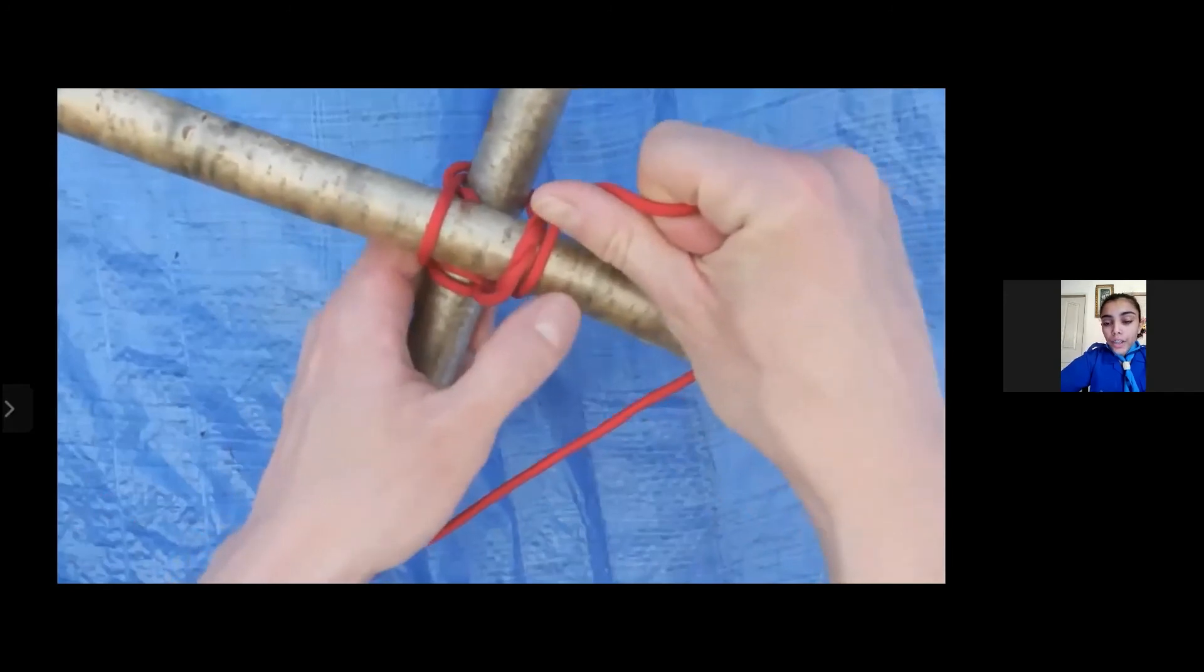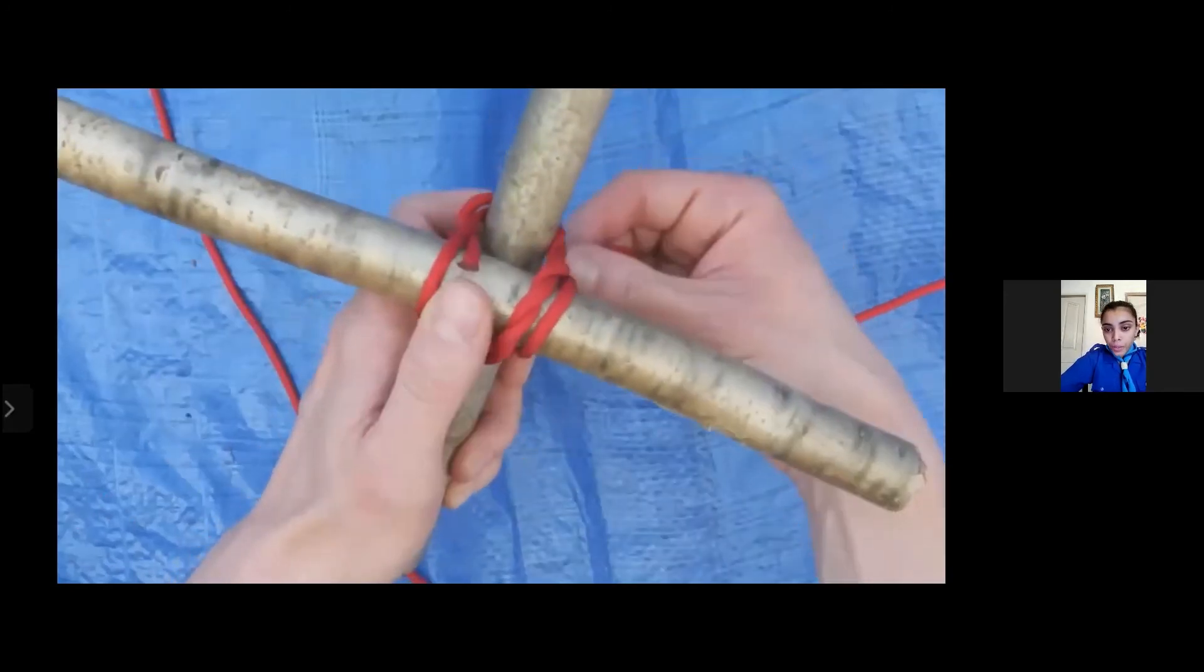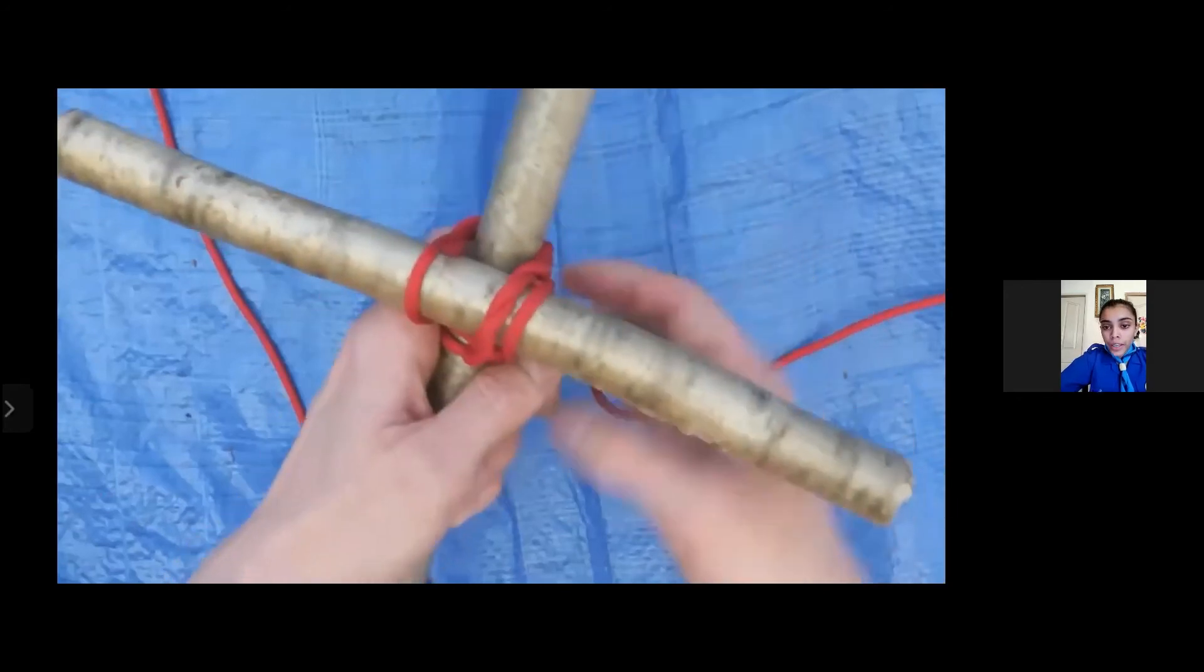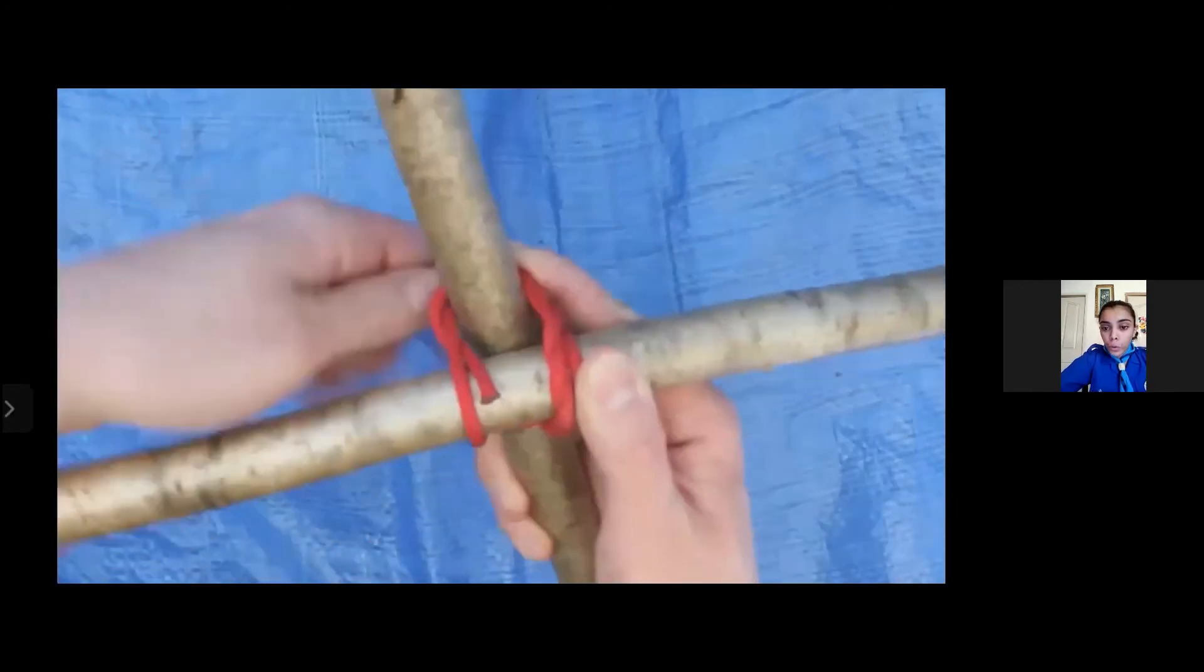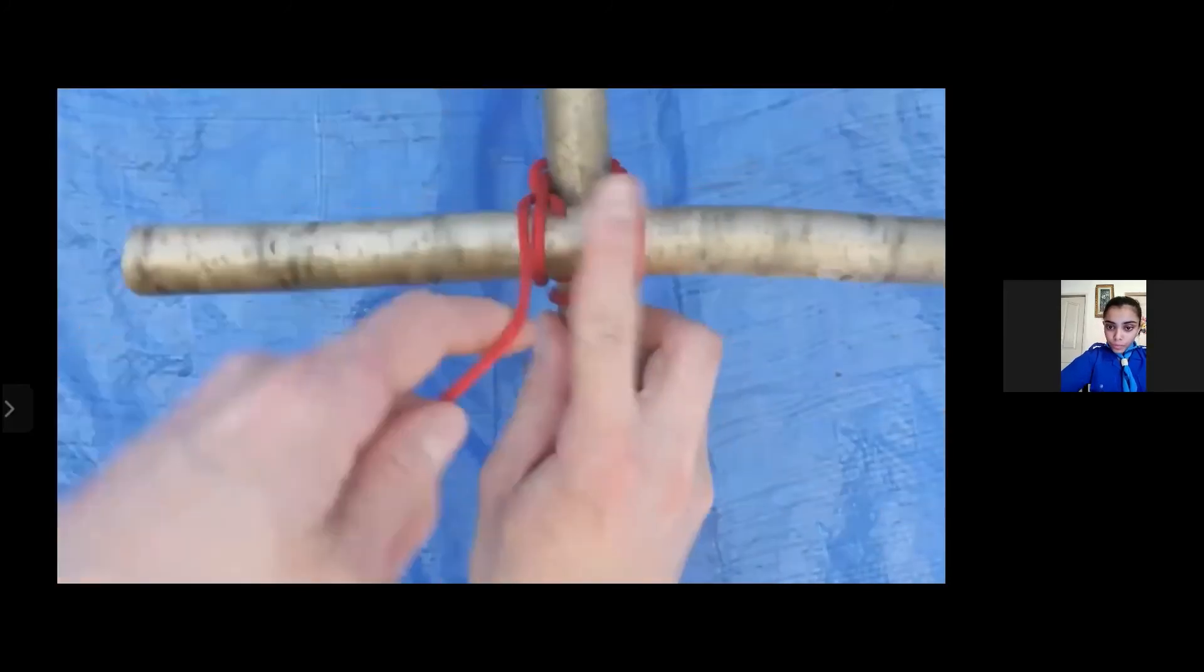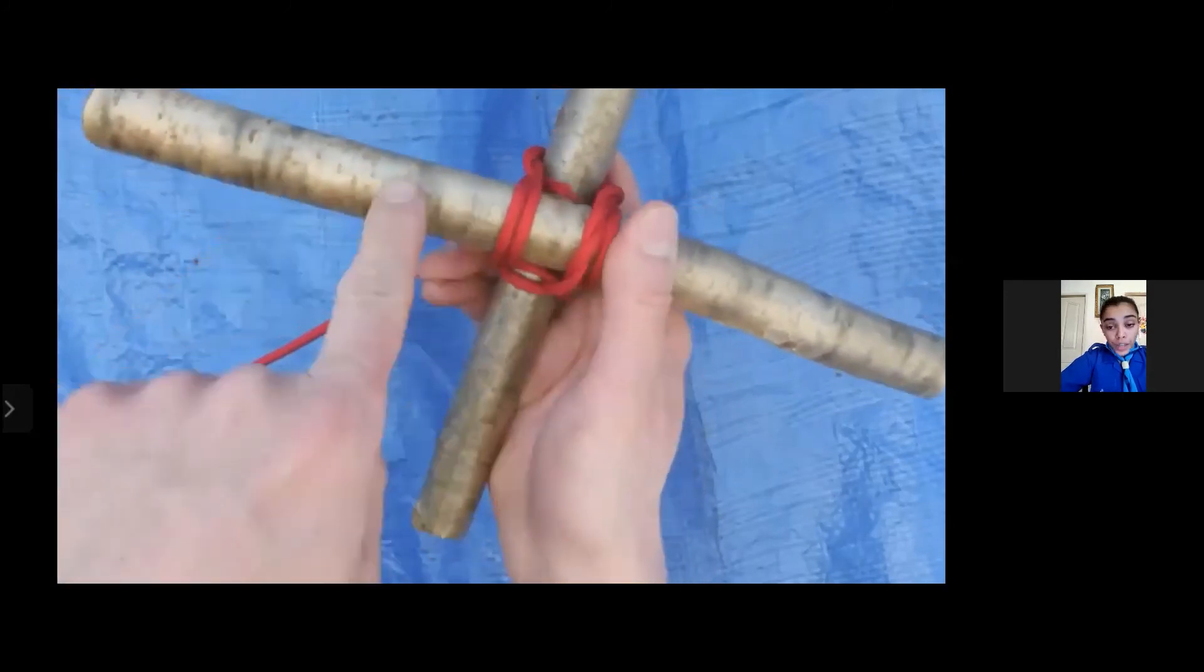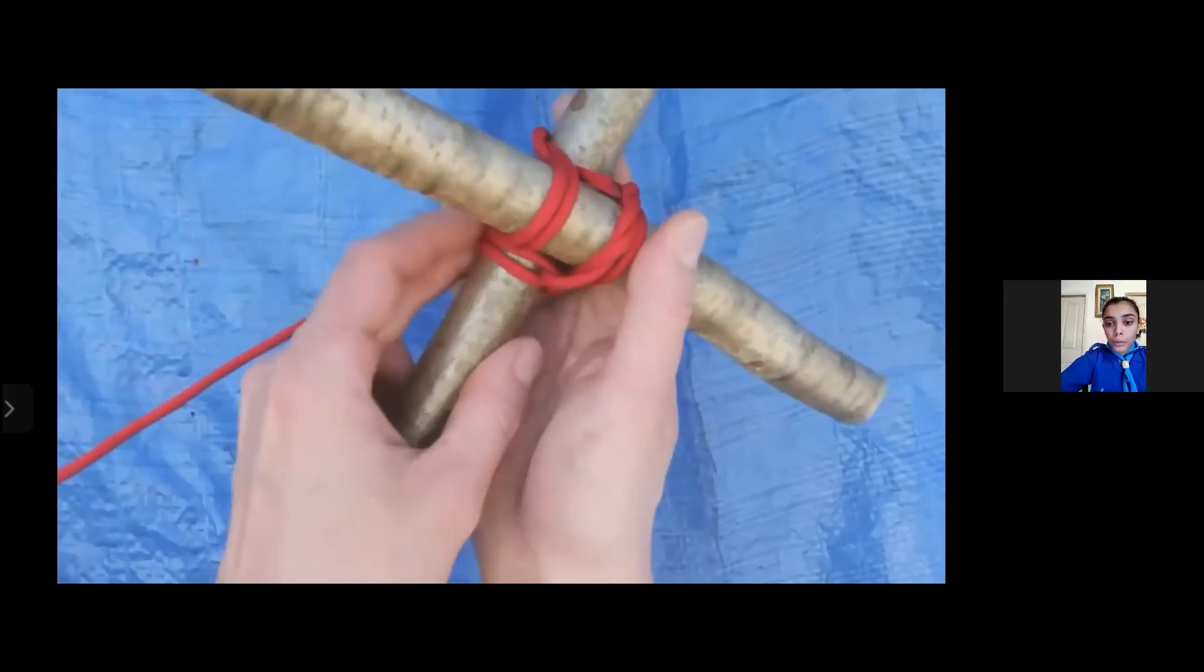Another thing you have to make sure is to tie the knots as closely as possible as this knot can open very quickly and it will not hold structures together if it is very loose. Now we do this very tightly till the rope is about to end.